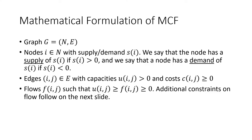Now let's get into the mathematical formulation of the MCF. We start with graph G which has nodes and edges. We have nodes i in node set N with supply or demand s(i). We say a node has a supply if s(i) > 0, and a demand if s(i) < 0. Edges (i,j) in edge set E have capacities u_ij > 0 and costs c_ij ≥ 0. Flows f_ij satisfy 0 ≤ f_ij ≤ u_ij — flows can be no more than the capacity and no less than zero.